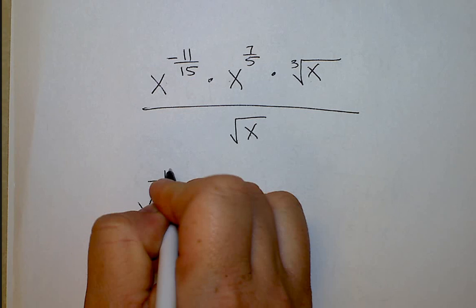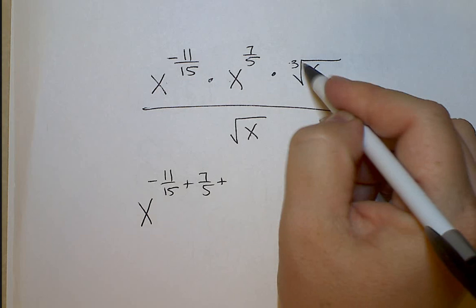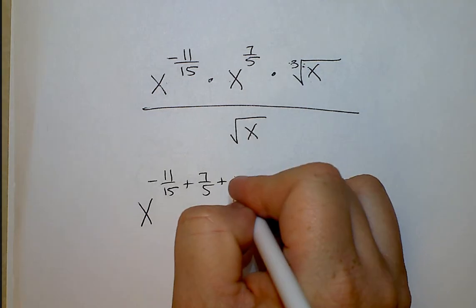So negative eleven fifteenths plus seven fifths plus, if I rewrite this in rational exponent form, it will be one third.